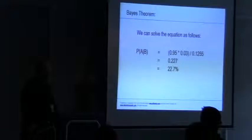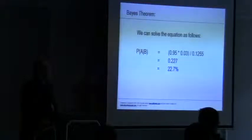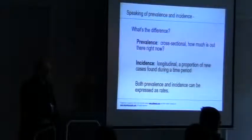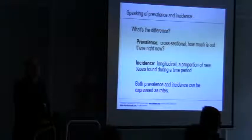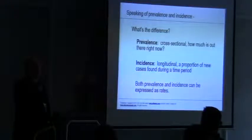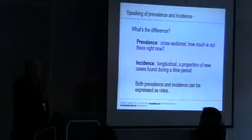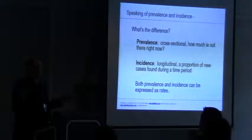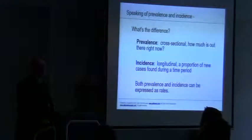You take your true positive rate times the incidence or prevalence. So, that was .95 times .03. And then you take one minus the prevalence, which is the .97, which is the number of falses in your population. It's 97%, not malicious. Multiply that by the false positive rate. You come out with this number, 12.5%. And you plug those numbers in, so you get the same 22.7%.